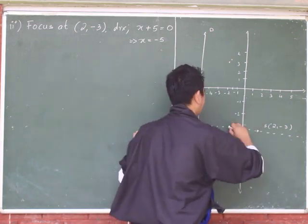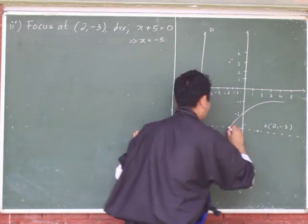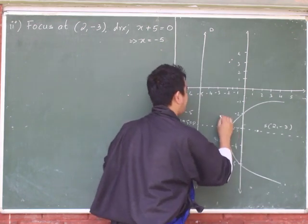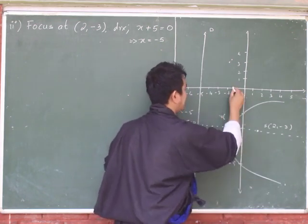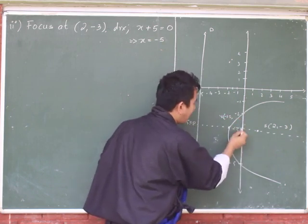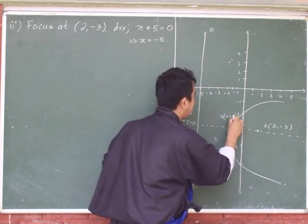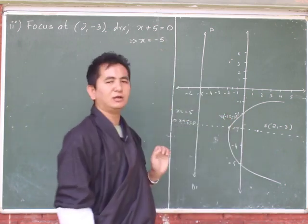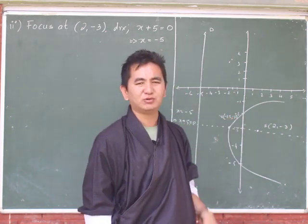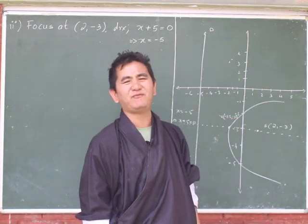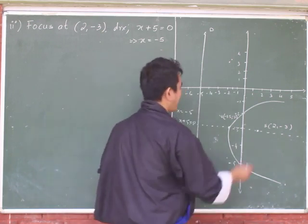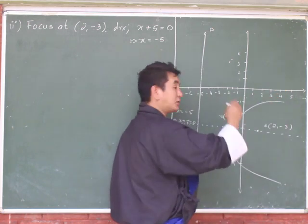Counting three point five units from the directrix — one, two, three point five — so this point becomes the vertex. The x value is negative one point five and the y value is negative three. So the vertex is at (-1.5, -3). This is a concave right parabola.